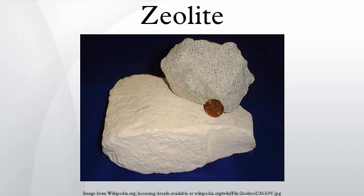The zeolite structural group includes zeolites with T5O10 units, the fibrous zeolites of the natrolite framework: gonnardite, natrolite, mesolite, paranatrolite, scolecite, and tetranatrolite. The edingtonite framework includes edingtonite, kalborsite, and the thomsonite series.